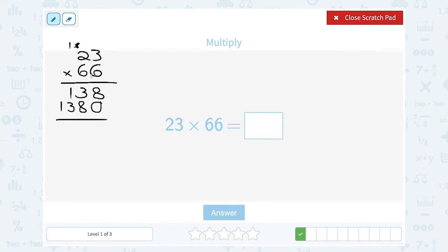Now just like before, since we multiplied one digit at a time, this first number, 138, is 6 times 23. And the second number, 1,380, was 60, right? We put a 0 in that ones place, 60 times 23. So I need to add those two things together to figure out what 66 times 23 is.